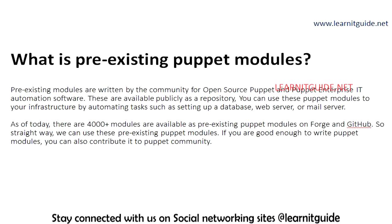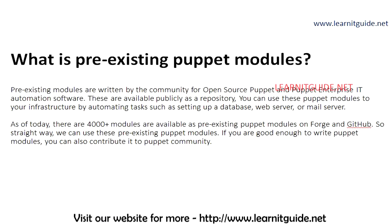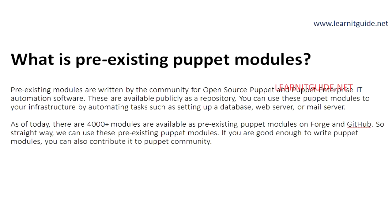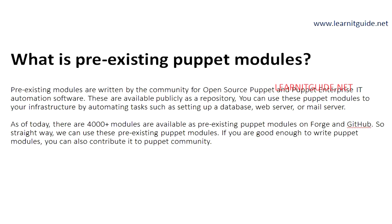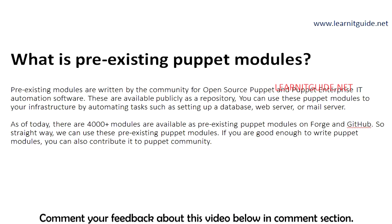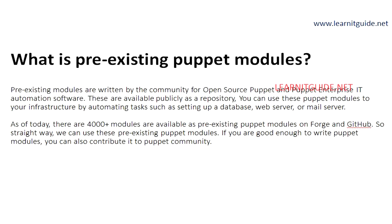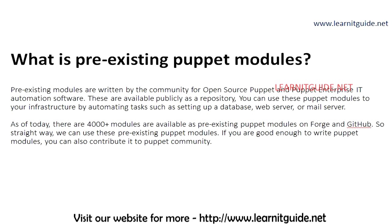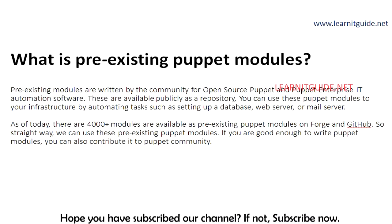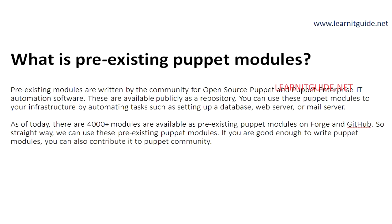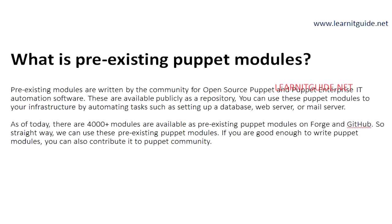These pre-existing Puppet modules are available to meet your infrastructure requirements. You don't need to write any manifest file or any Puppet modules — these are available on Forge and GitHub websites. You can go and download the modules, upload them to your Puppet Master server, and include the classes. As of today, there are 4,000 plus modules available as pre-existing Puppet modules on these sites. So you can use these pre-existing Puppet modules even if you don't have a programming background, instead of creating new code from scratch.